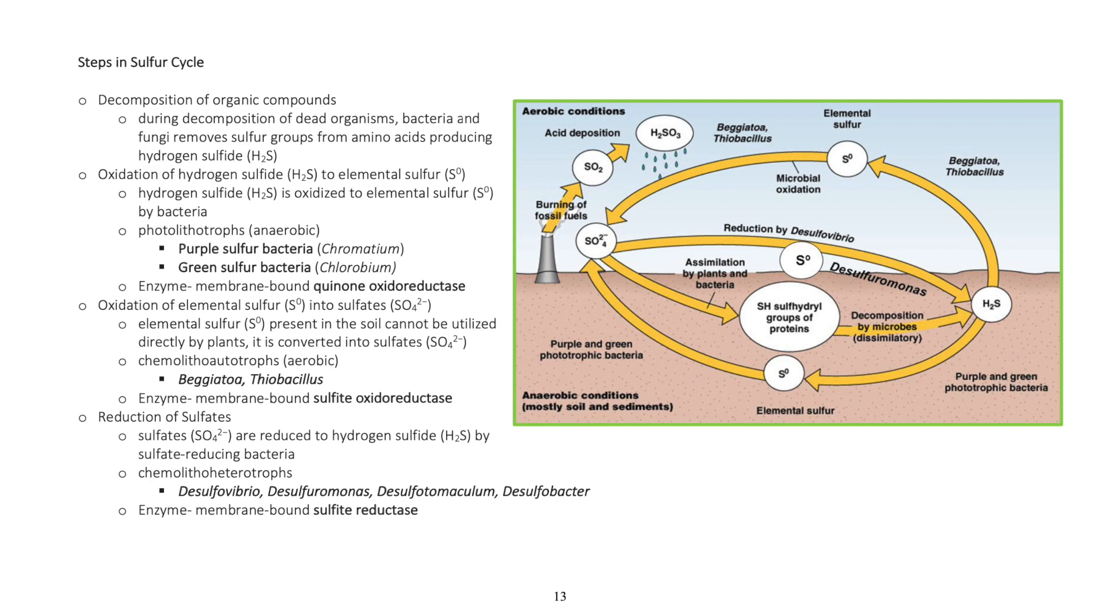Steps in Sulfur cycle. Decomposition of organic compounds. During decomposition of dead organisms, bacteria and fungi remove sulfur groups from amino acids, producing hydrogen sulfide.